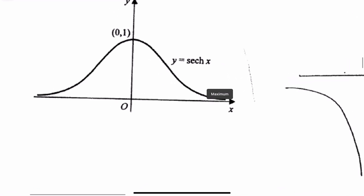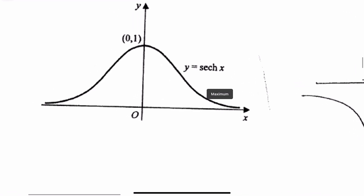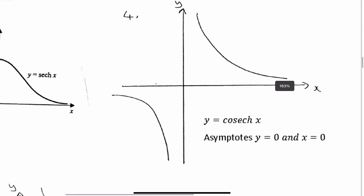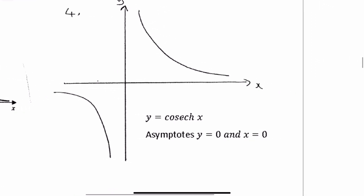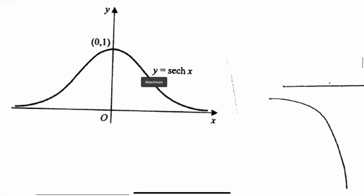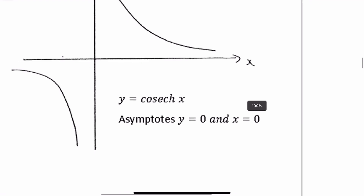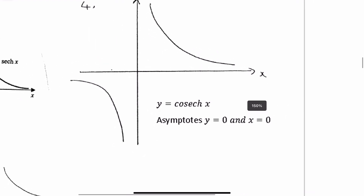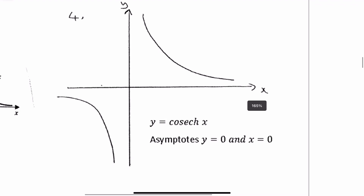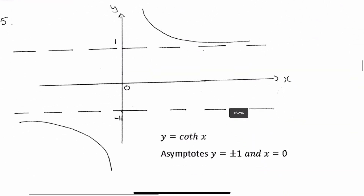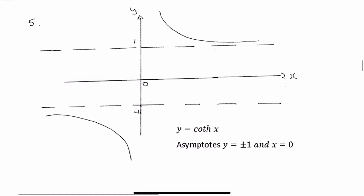A couple of trickier ones: hyperbolic sec and cosec. Remember, hyperbolic sec is 1 over hyperbolic cosine, and hyperbolic cosec is 1 over hyperbolic sine. You can see those graphs. We're not going to go through where we get them from, but you do need to know those, so please learn them. And hyperbolic cot, which is 1 over hyperbolic tan.